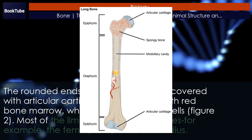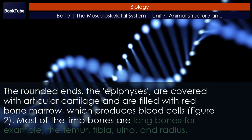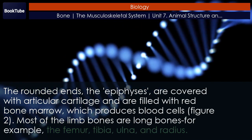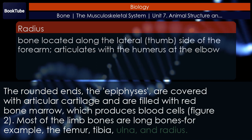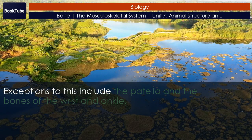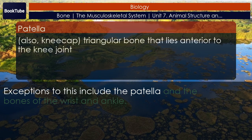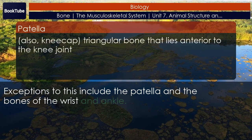Most of the limb bones are long bones — for example, the femur, tibia, ulna, and radius. Exceptions to this include the patella and the bones of the wrist and ankle.